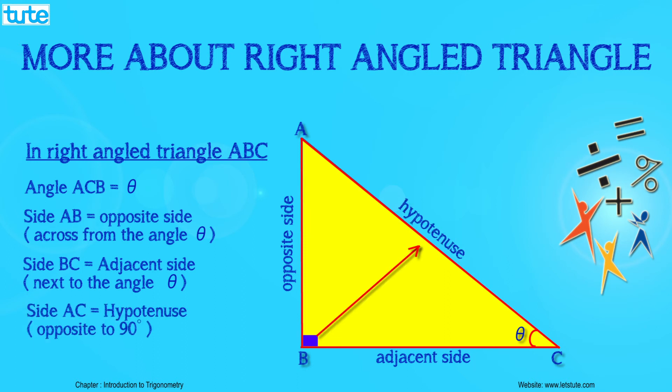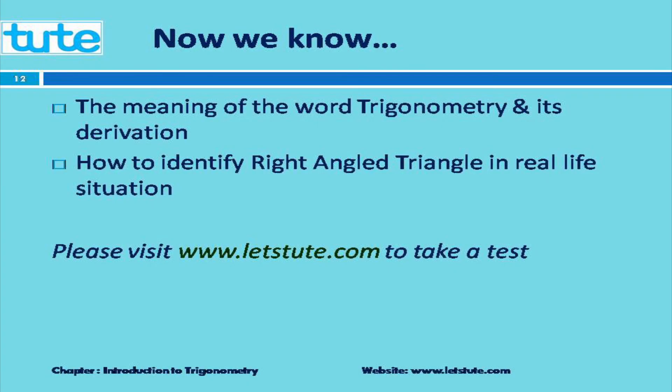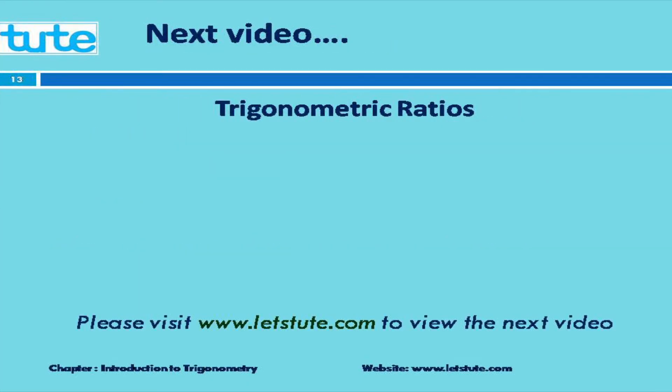Hypotenuse is always the longest side of a right-angled triangle. Hope you enjoyed learning.